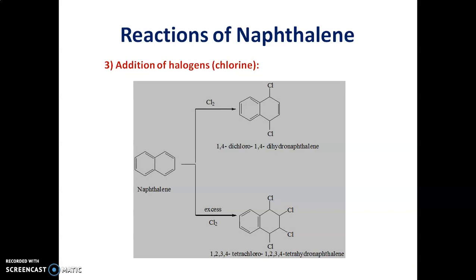The third addition reaction of naphthalene includes addition of halogens. Naphthalene can react with chlorine or bromine and it gives ortho-disubstituted or tetrasubstituted compound. Naphthalene on reaction with chlorine gives 1,4-dichloro-1,4-dihydronaphthalene. Whereas, if you treat naphthalene with excess of chlorine, we get 1,2,3,4-tetrachloro-1,2,3,4-tetrahydronaphthalene.